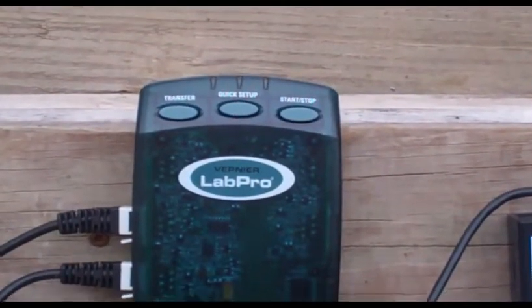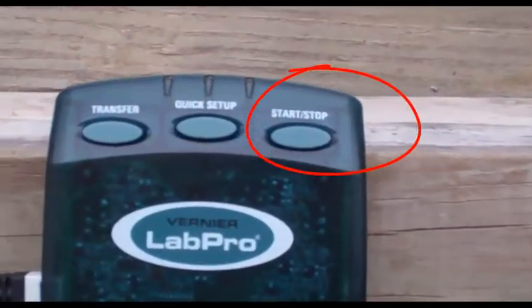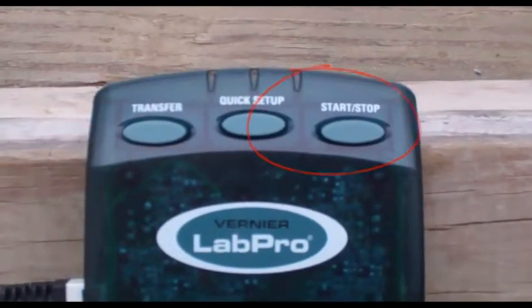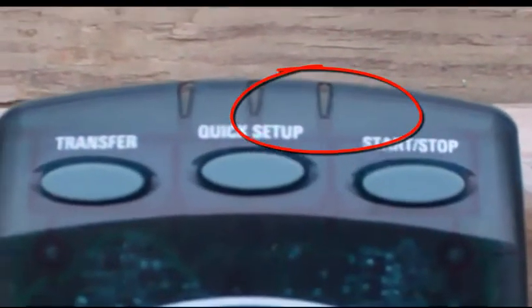On the top of the LabPro is a stop-start button that you click when you want to begin acquiring data. Other lights turn on every time a sample is taken.